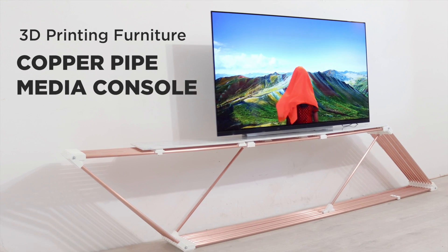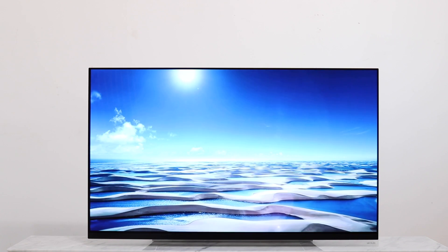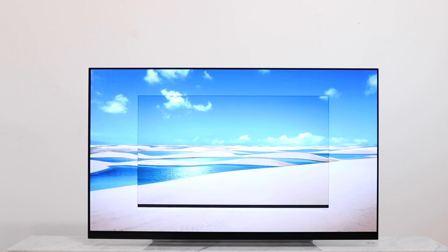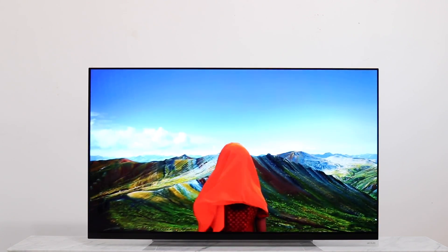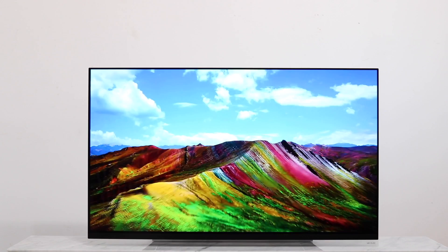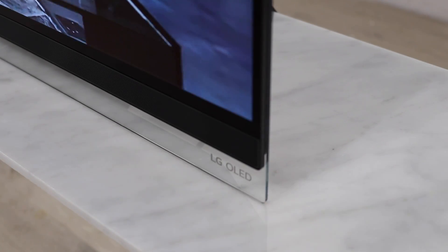Today we're going to use copper pipe and 3D printers to make a media console. This video is sponsored by LG and I'm featuring the 4K wallpaper thin 55 inch LG E9 OLED TV. The unique floating design is created by a glass bezel that the TV rests on. This is a really cool design feature that gives it that floating minimalist look.